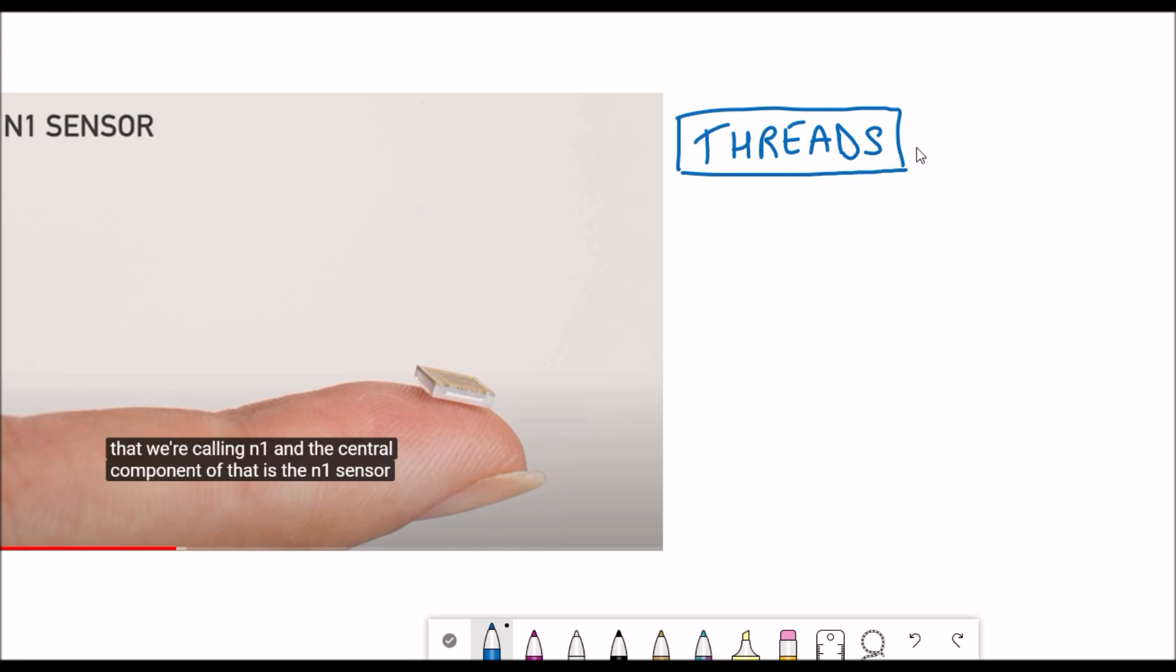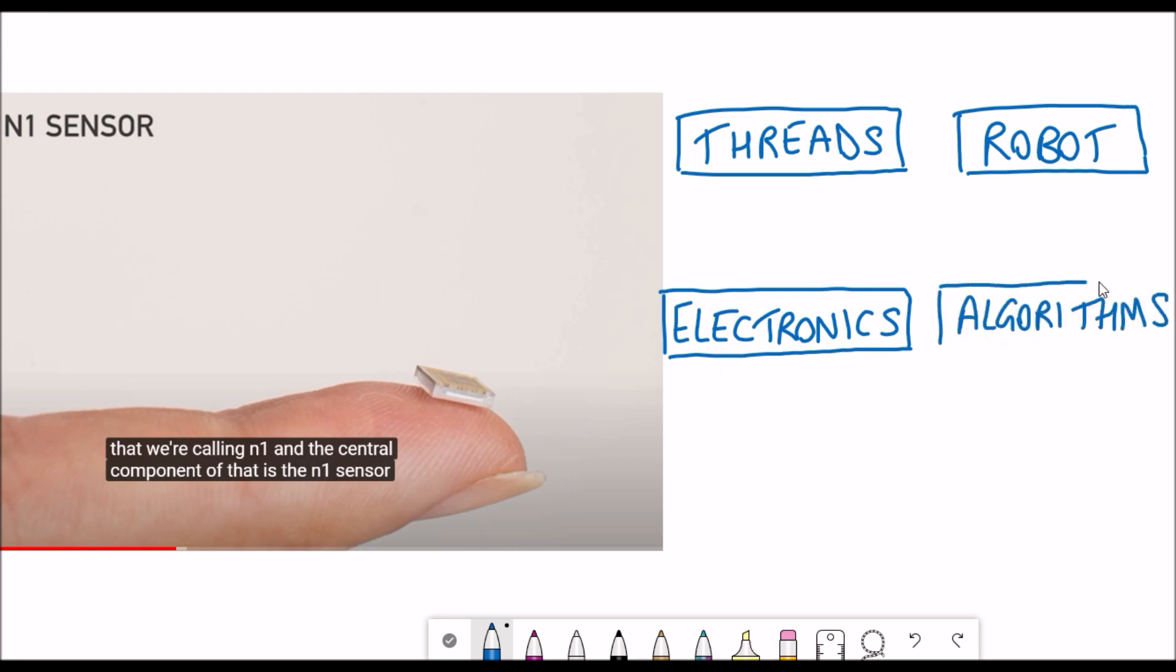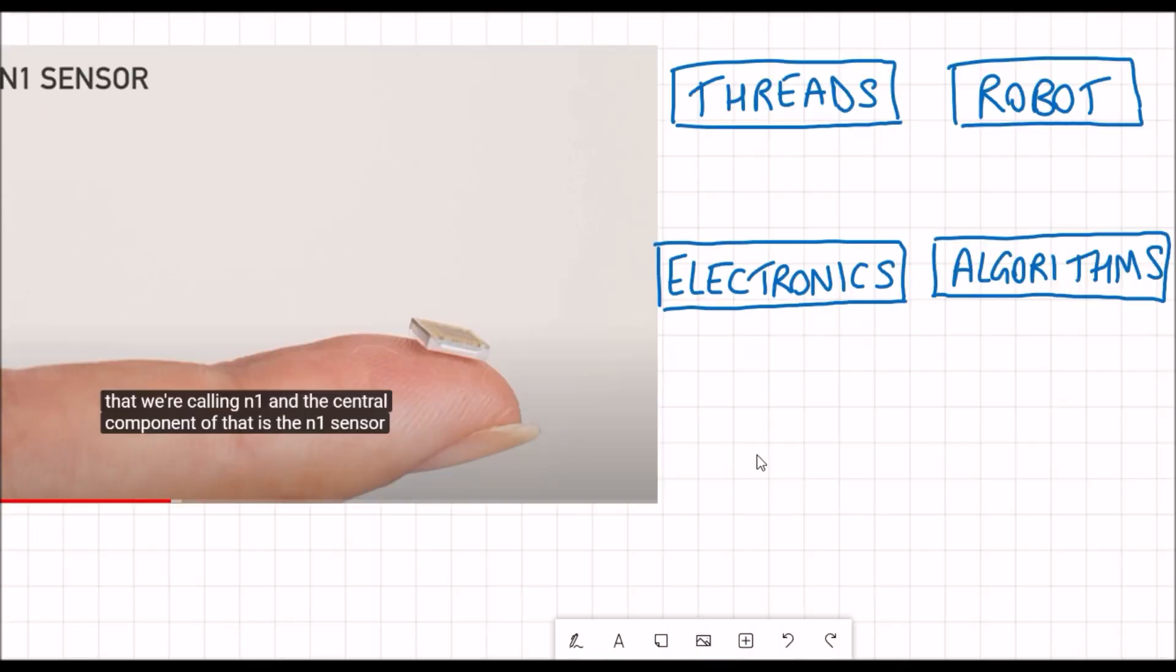Neuralink have developed a variety of different models and improved upon them each time but the one that they most recently presented was an N1 sensor and the key components to this brain machine interface include threads, robotics, electronics and algorithms.